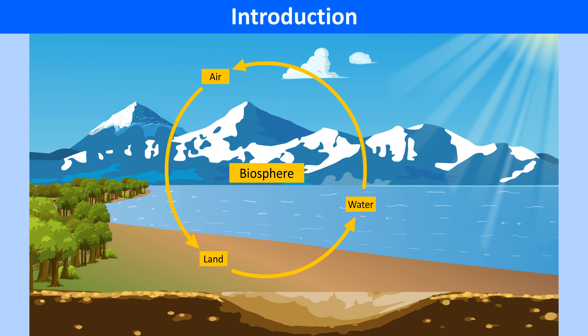The term realm means sphere or an area of specific dimensions. The four main realms of the earth are lithosphere, hydrosphere, atmosphere and biosphere.